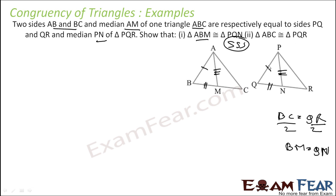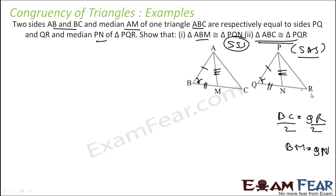Second, triangle ABC is congruent to triangle PQR. Since triangles ABM and PQN are congruent, angle B equals angle Q. BC equals QR, and angle B equals angle Q, so by SAS these two triangles are congruent. I used the information from the first congruency to prove triangle ABC is congruent to triangle PQR.